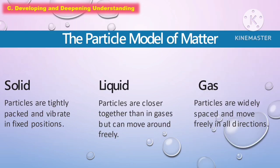The following are the particle model of matter. The first one is solid — particles are tightly packed and vibrate in fixed positions. The second one is liquid — particles are closer together than in gases but can move around freely. And the third one is gas — gas particles are widely spaced and move freely in all directions.